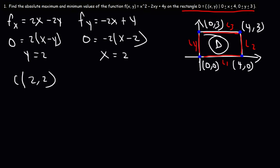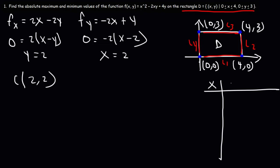The absolute maximum and minimum values could be any one of the four endpoints on this rectangle, a point on the line segment, or this critical point or some other point inside this region. We have to find out where those points are. One thing we need to do is make sure that the critical point lies in the rectangle D, which it does — (2, 2) is definitely in this range. So now I'm going to make a table with x, y, and the function value f, and place all the endpoints as well as the critical point (2, 2).